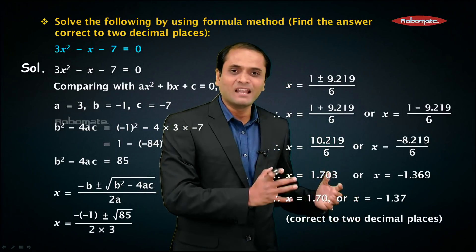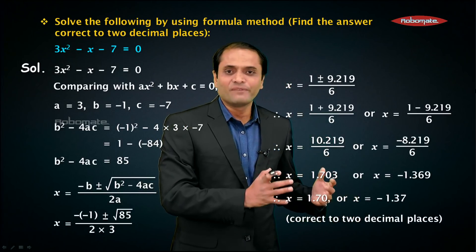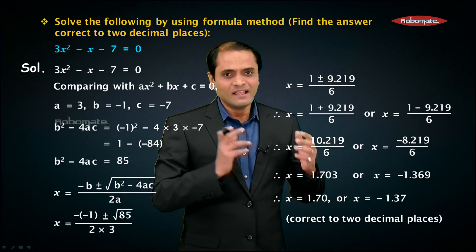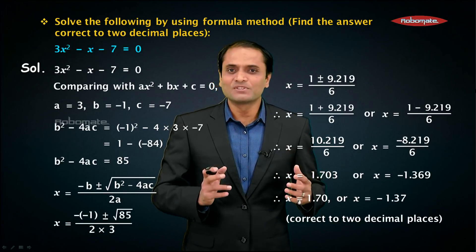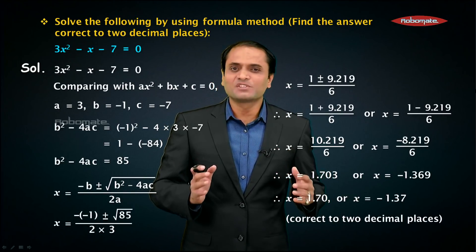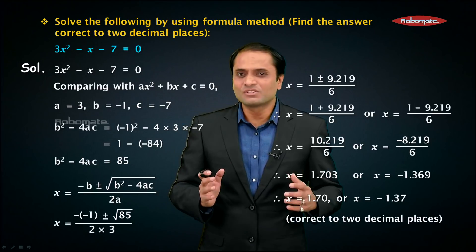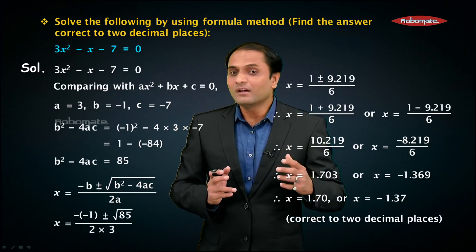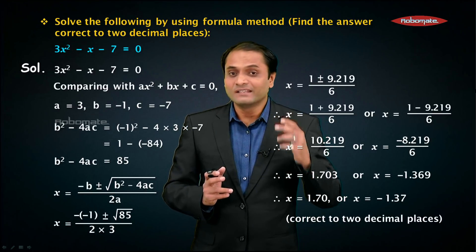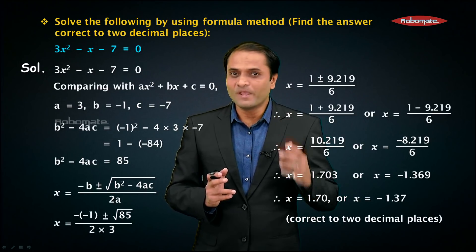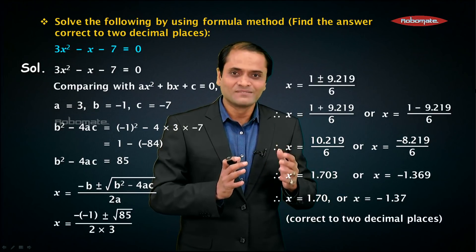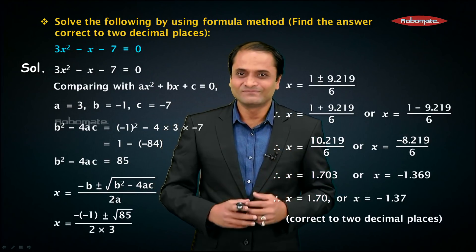This is the final answer — values of x correct to two decimal places. I hope you understood this sum. Normally you can expect one such question in the ICSE Maths 10th board paper for 3 to 4 marks. Thank you.